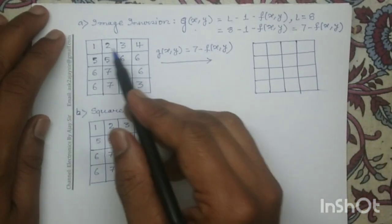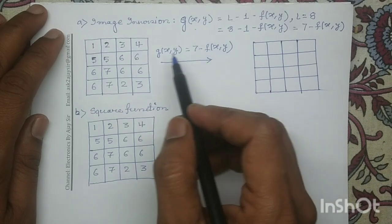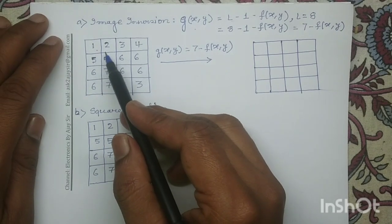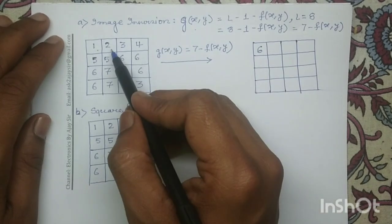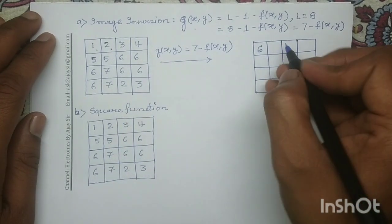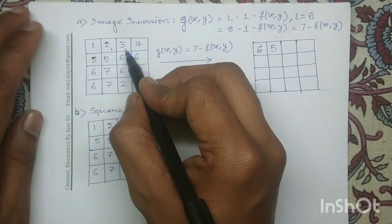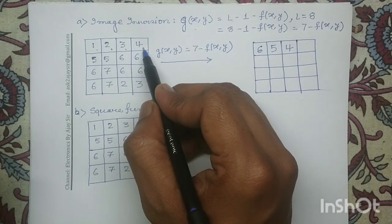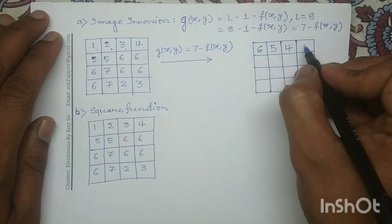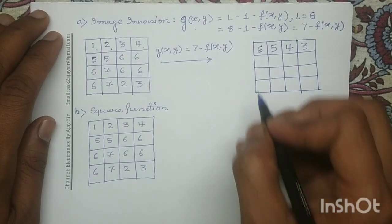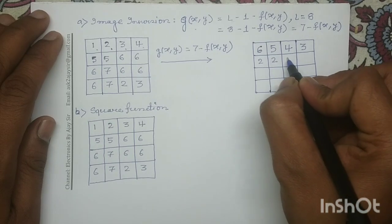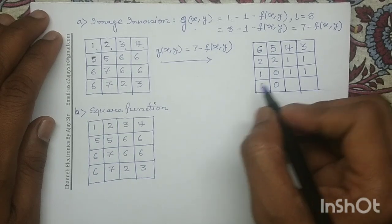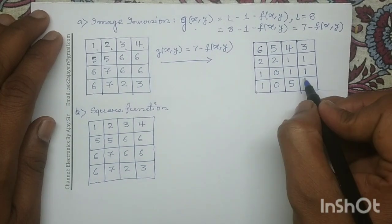For each pixel value we will apply the transformation equation 7 minus f(x,y). For example, for this pixel the intensity value is 1, so 7 minus 1 becomes 6. Similarly, for this pixel the intensity level is 2, so 7 minus 2 becomes 5. For this pixel it is 3, so 7 minus 3 becomes 4. For this pixel the intensity level is 4, so 7 minus 4 equals 3. Similarly, if we determine for the remaining pixels we obtain the output digital image.